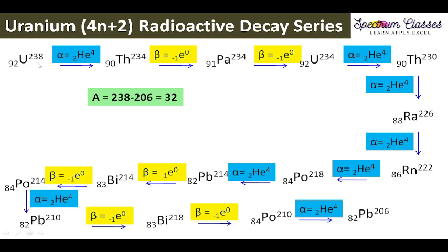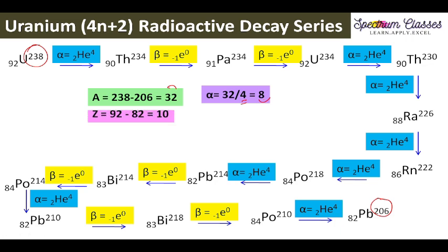We take the mass number of uranium and the end product lead: 238 minus 206 gives 32. Since each alpha particle decreases the mass number by 4, we divide 32 by 4 and get 8. So 8 alpha particles are removed. Similarly, we can calculate the number of beta particles using the atomic number.